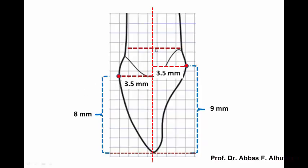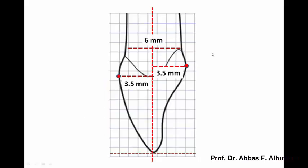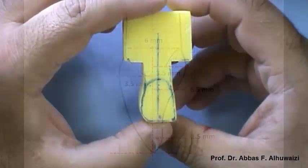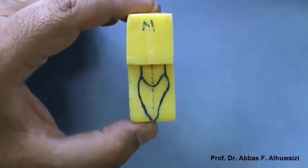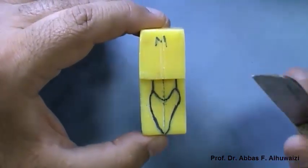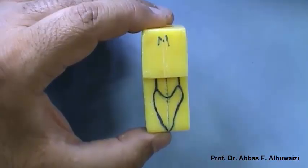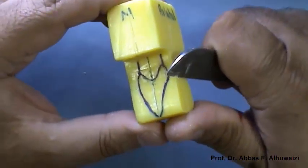The width of the root is 6 mm. The slope of the incisal edge ends about 1.5 mm lingually, while the end of the cingulum is at 6.5 mm from the incisal edge. In between these two points, a concavity is shown. After drawing the mesial surface on the block, we bring the plaster knife and cut the excess as we did on the labial surface.